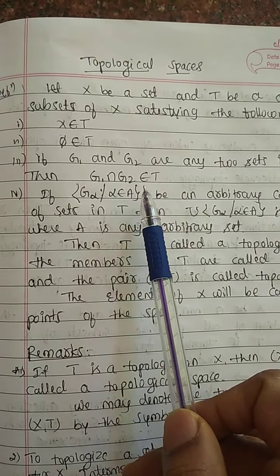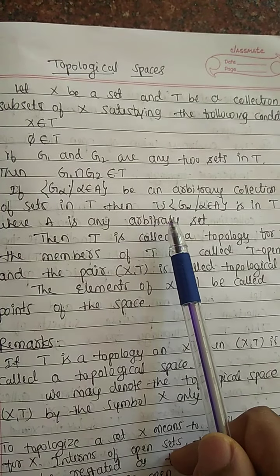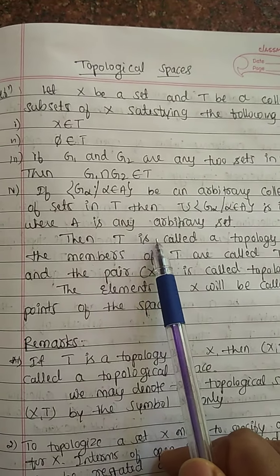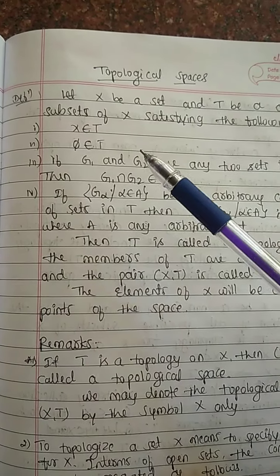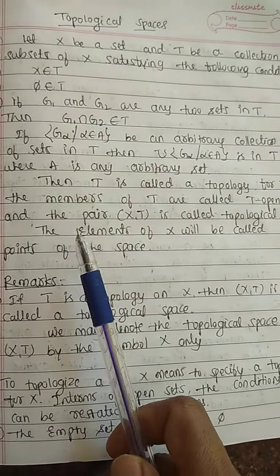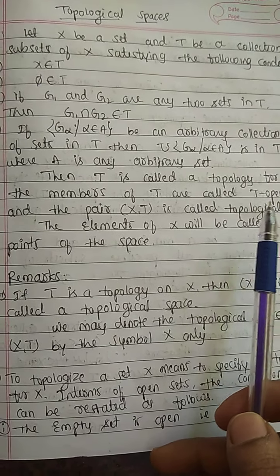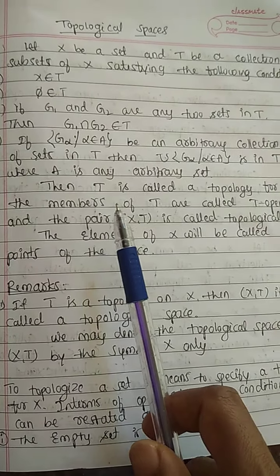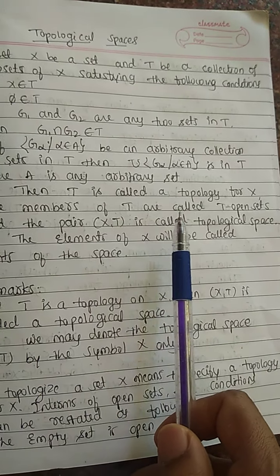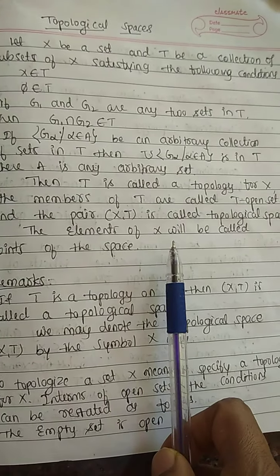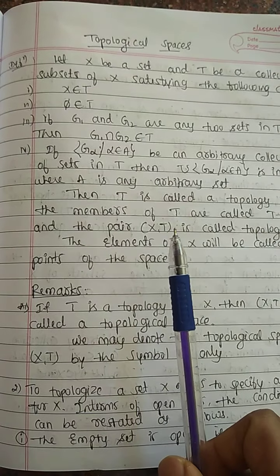Fourth condition: if {G_α : α ∈ A} is any arbitrary collection of sets in T, then their union — the union of G_α for α in A — is also in T, where A is any arbitrary set. If these four conditions hold, then T is called a topology for X. The members of T are called T-open sets, and the ordered pair (X, T) is called a topological space.